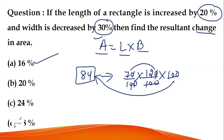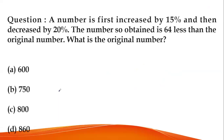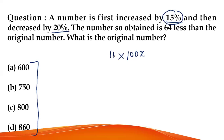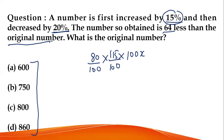Since we take starting value as 100, the 16 directly represents 16%. Moving to the next question: a number is first increased by 15%, then decreased by 20%. Here you need to find the actual value, so instead of 100, take the original number as 100X. It first increases by 15% → 115%, then decreases by 20% → 80%. The number so obtained is 64 less than the original number.